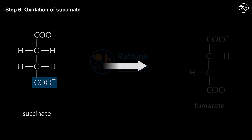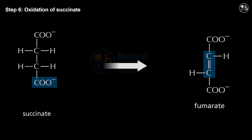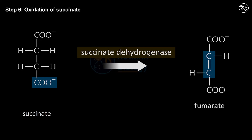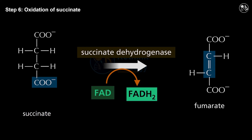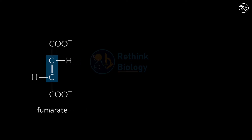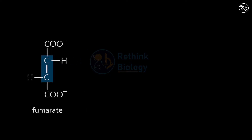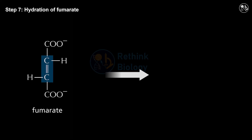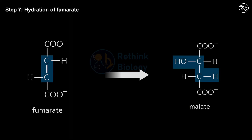Step 6: Oxidation of succinate. In this step, succinate is oxidized to form fumarate. This reaction is catalyzed by the enzyme succinate dehydrogenase and transfers electrons to FAD to form FADH₂.